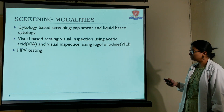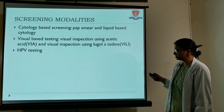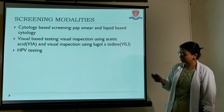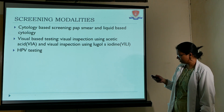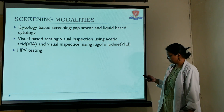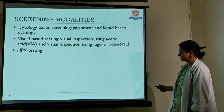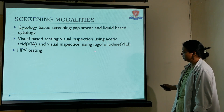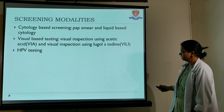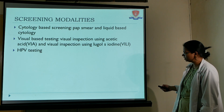Screening modalities for cervical cancer include: cytology-based screening (Pap smear and liquid-based cytology), visual-based testing using visual inspection with acetic acid (VIA) and visual inspection with Lugol's iodine (Schiller's test) — used in poor resource settings — and HPV testing, which is being recommended these days.